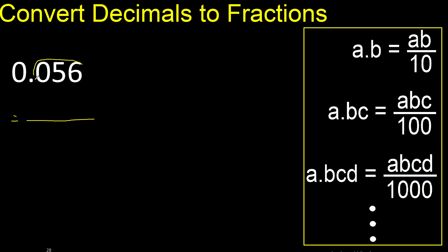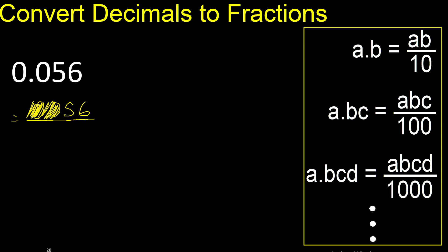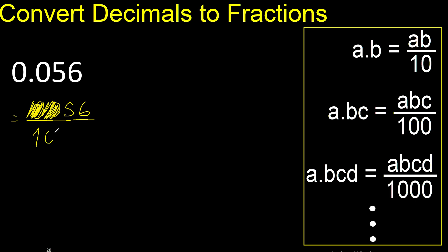First, all the number without point, like this. Eliminate zeros on this side — here always number 1. After the point there are 3 numbers, therefore here 3 zeros.